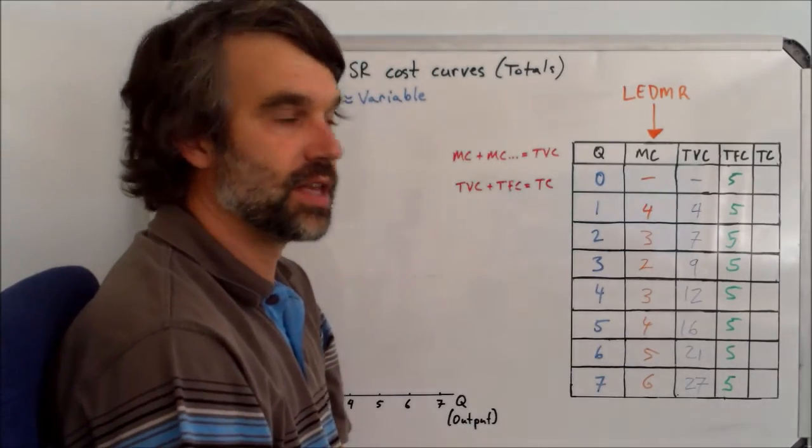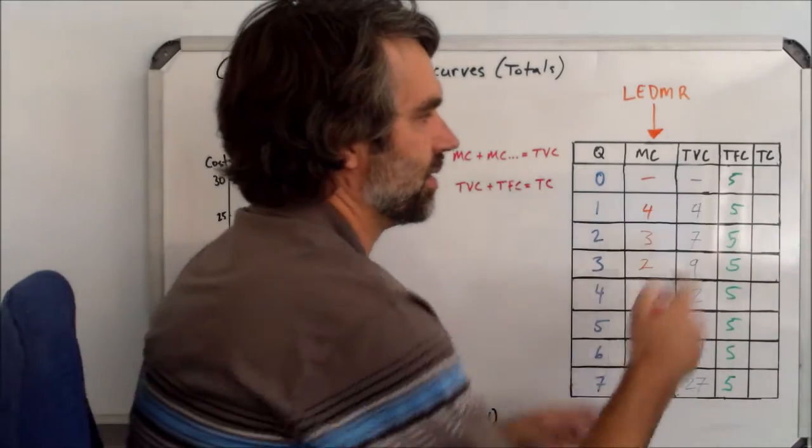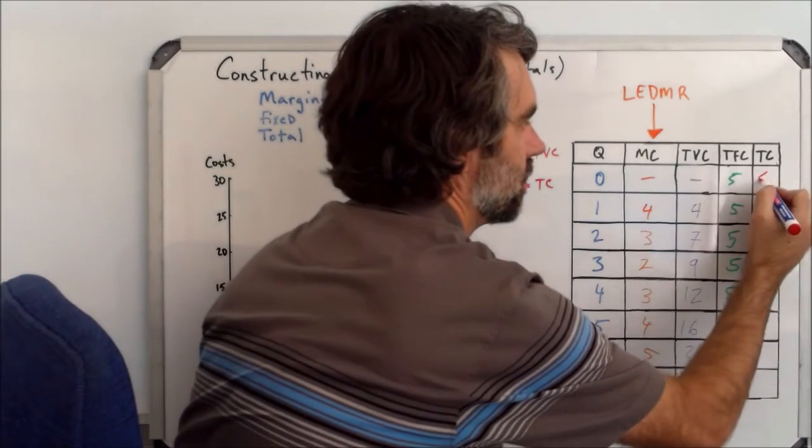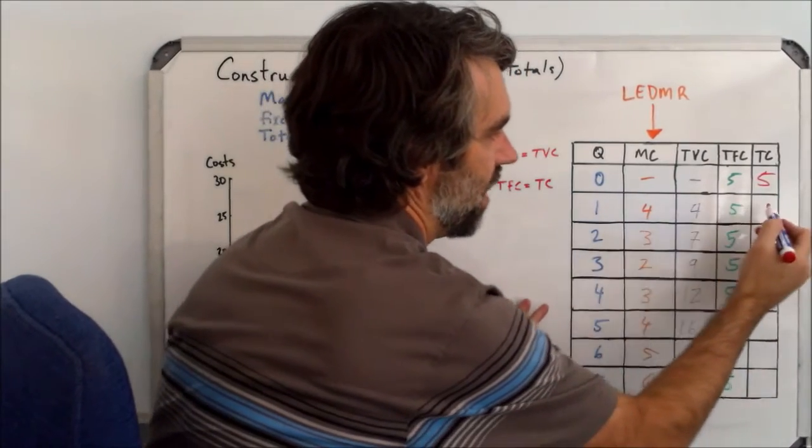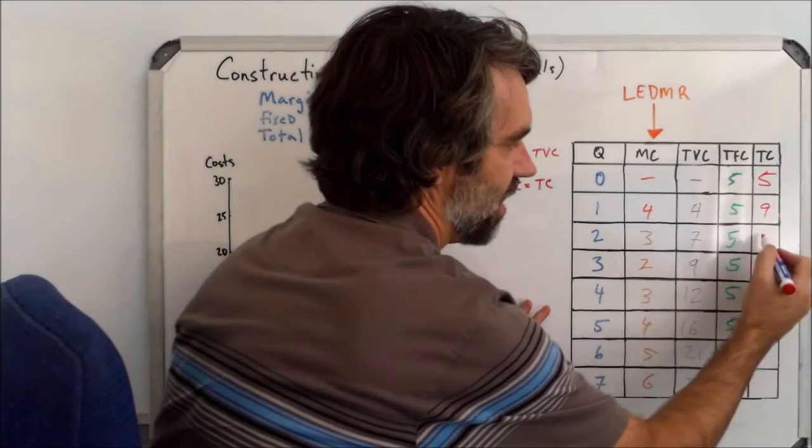The total cost, then, is just simply adding across. So zero and five is five, four and five is nine, seven and five is twelve.